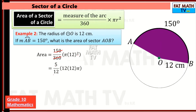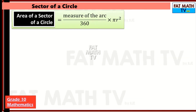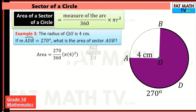Then 12 squared is 12 times 12. Since I can cancel one factor of 12, I'm left with 5 times 12 times pi, which equals 60pi. So the area of the sector is 60pi square centimeters, or approximately 188.50 square centimeters.